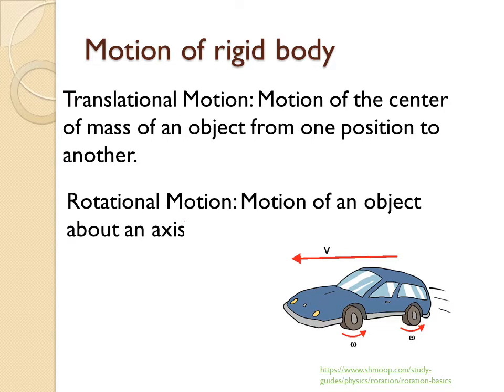When we consider the motion of a rigid body, there are two different types: translational motion and rotational motion. In translational motion, the center of mass of an object moves from one point to another — the motion of a car is an example. The center of gravity of the body is displaced from one position to another position.